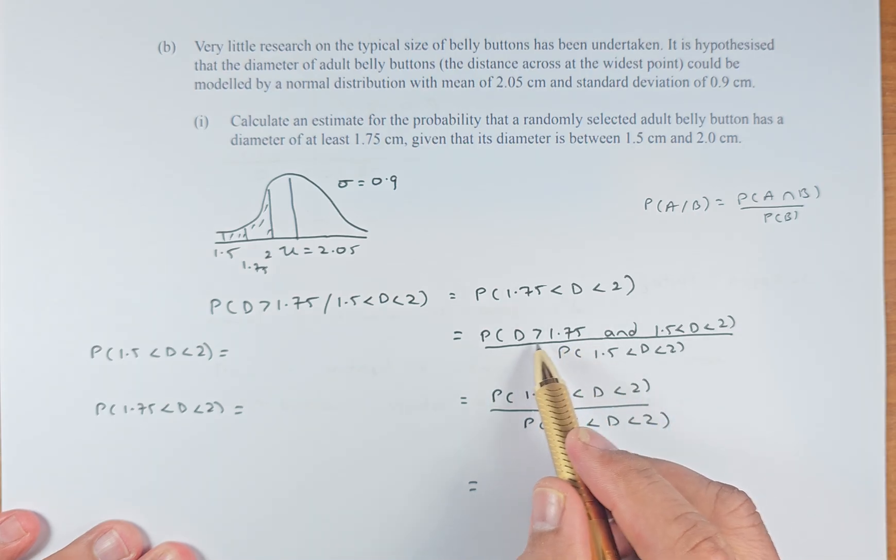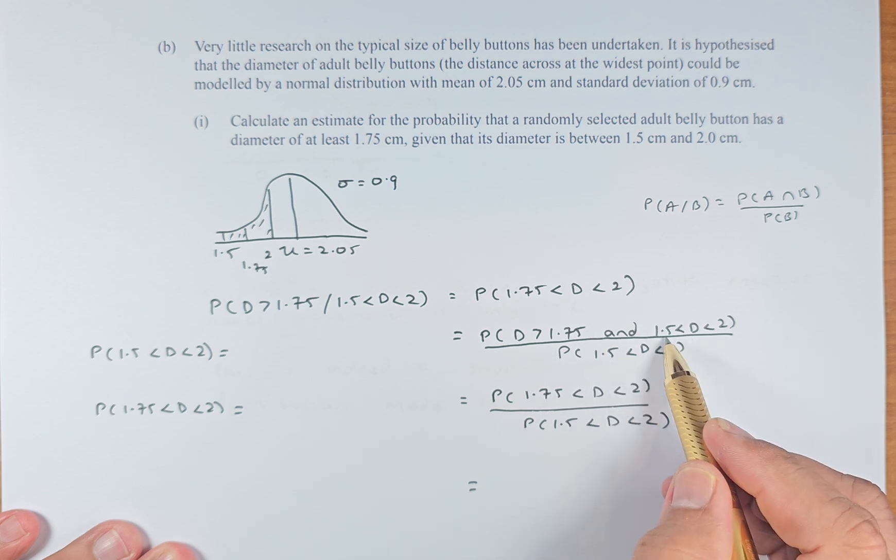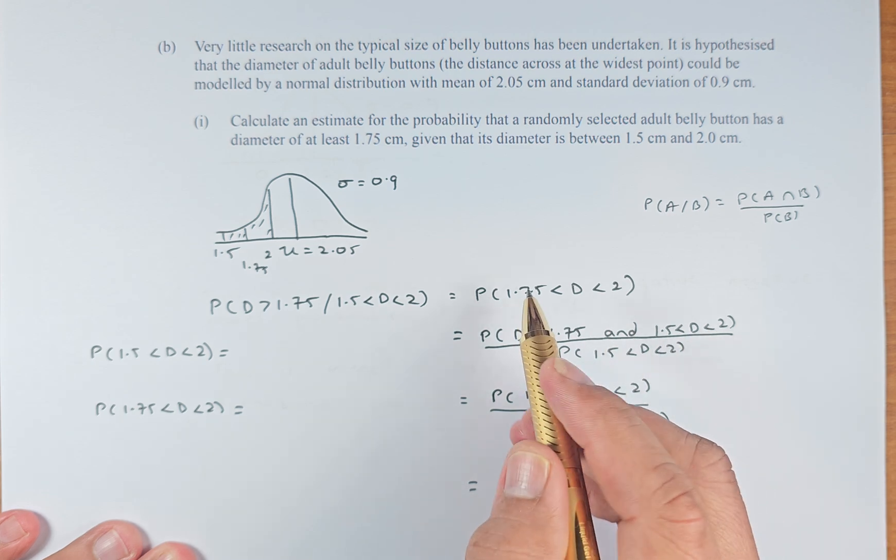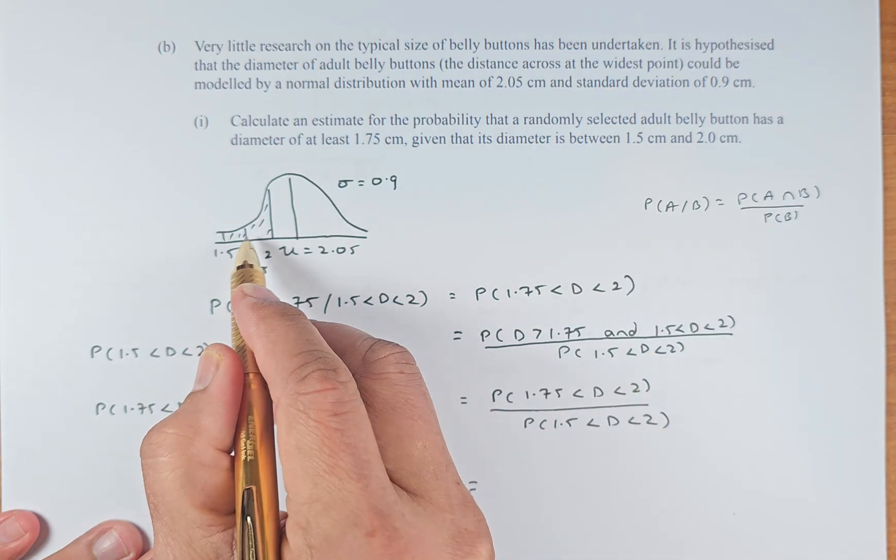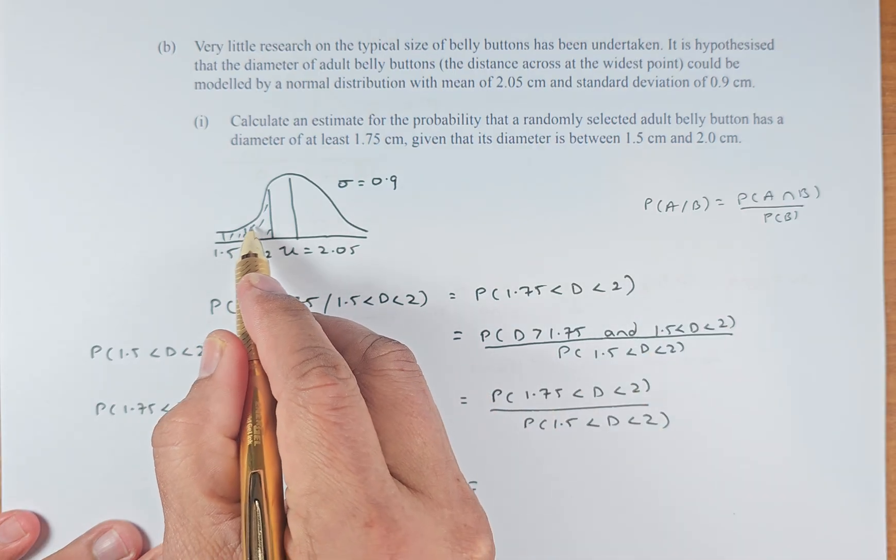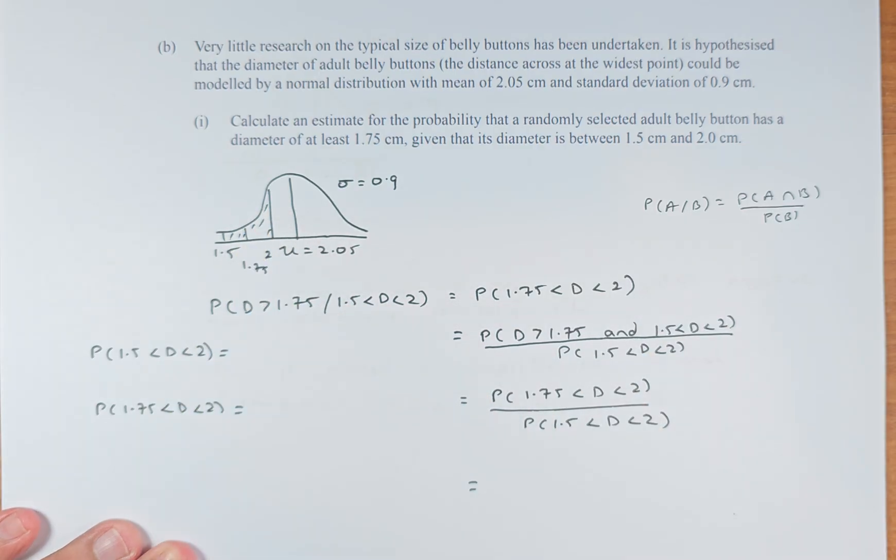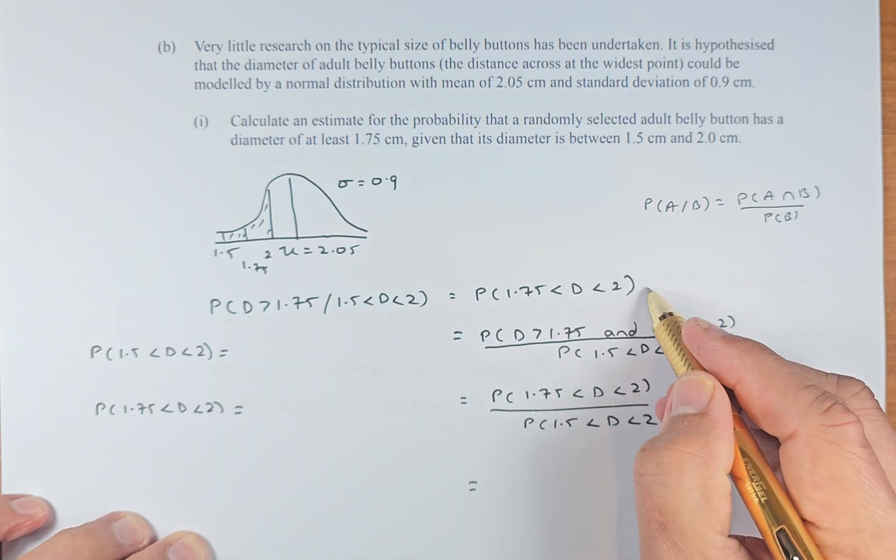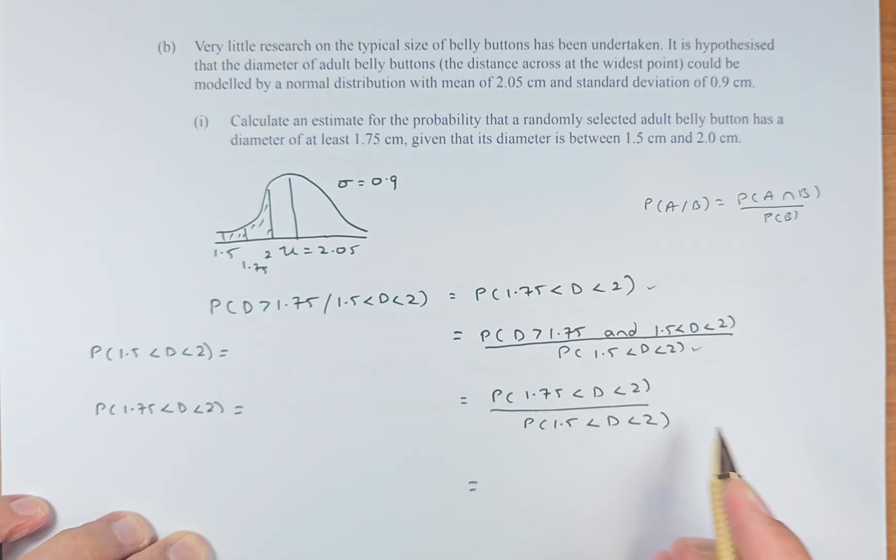Probability is a diameter greater than 1.75 and diameter is between 1.5 and 2 divided by probability of 1.5 and 2. So we need to know that the top part, the numerator, greater than 1.75 and given that it is between 1.5 and 2 is the same as this. So 1.75, so we are looking at this area here. To do that, we are going to the graphic calculator.